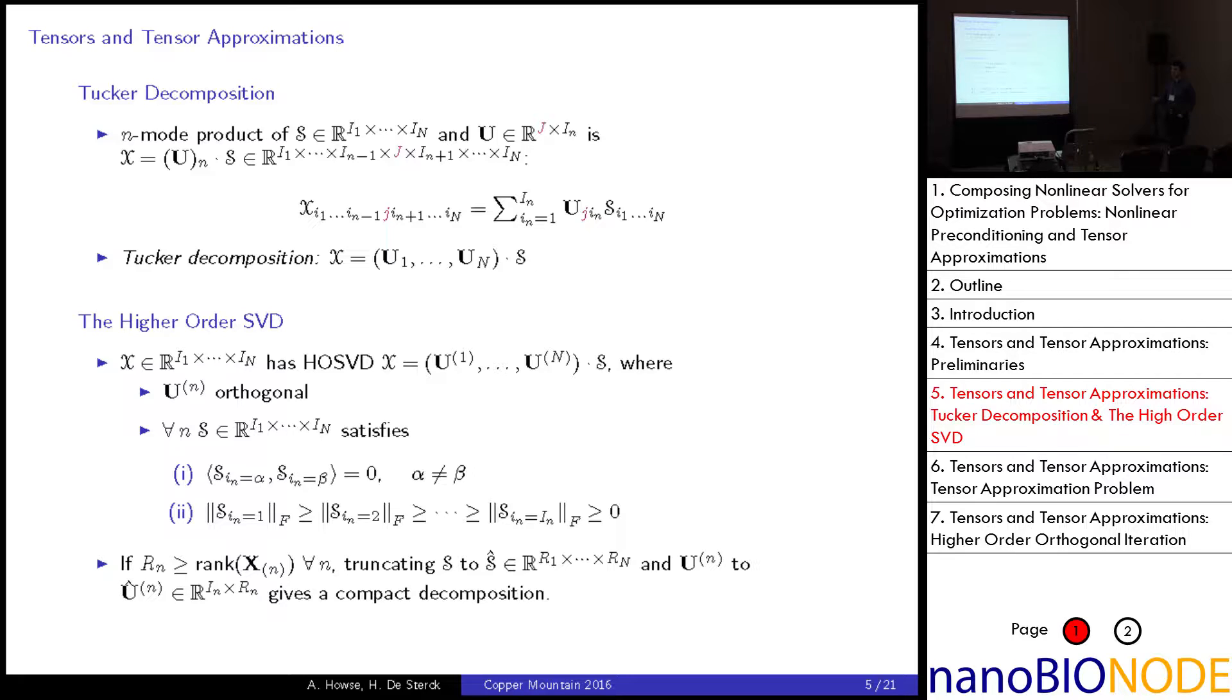So, the Tucker decomposition is simply writing a tensor X as a multilinear product of a core tensor S and matrices multiplying each of the different n modes. A very, or a particular useful example of the Tucker decomposition is the higher order SVD, which is a bit of a generalization of the matrix SVD. A tensor X has an HOSVD with matrices U and a core tensor S, where all our matrices are orthogonal. And the core tensor is not diagonal, unfortunately, but it has some nice properties. We have orthogonal subtensors, and the subtensors are also ordered in order of decreasing magnitude in Frobenius norm.